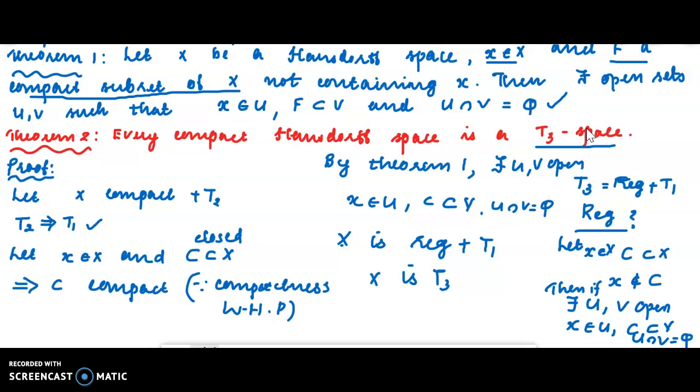The key point is using compactness as a weakly hereditary property. When we set the closed set, we have a compact set. The point and the closed set, actually it is compact, can be separated. The regularity plus T1 gives us T3.